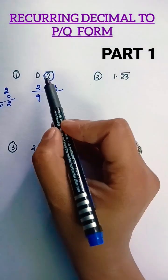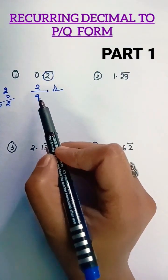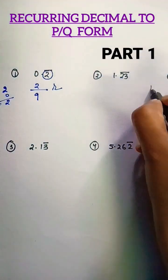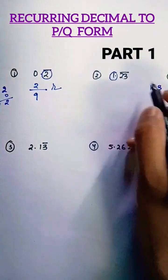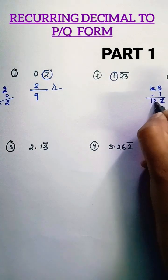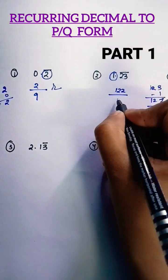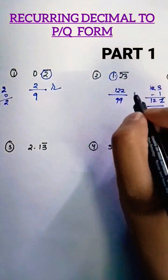If you have more than one digit under bar, then you will write the same number of 9s. For example, another question: 1.23 bar. So we will write 123, the complete number, and then subtract the number without bar. 123 minus 1, that is 122. So 122 divided by 99, because we have 2 digits under bar.